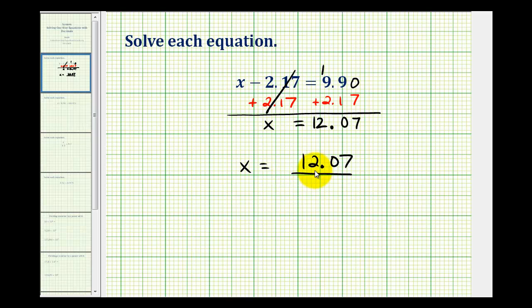Which means if we substitute 12.07 for x, it should satisfy the original equation. So let's go ahead and check it. Well, 12.07 minus 2.17 is 9.9, which does verify our solution.